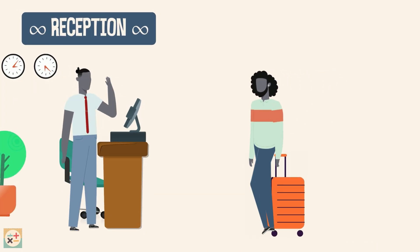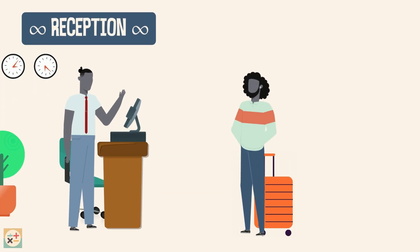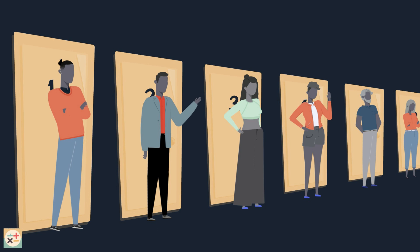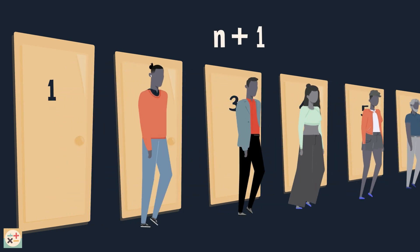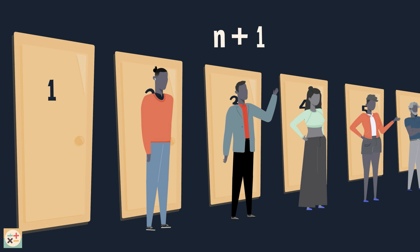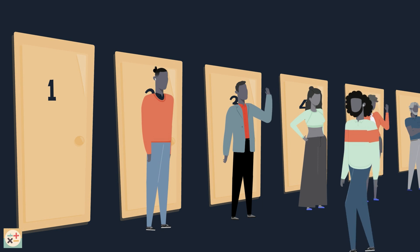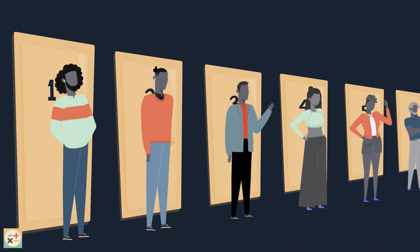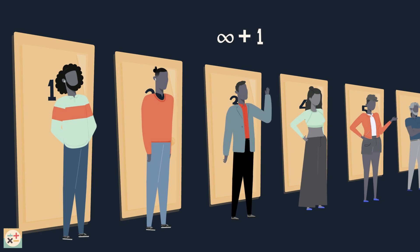Let's say a new guest arrives, but all the rooms are full. How can we make space? Simple — we ask each guest to move from their current room to the next one. The guest in room 1 moves to room 2, the guest in room 2 moves to room 3, and so on. This is possible as there are an infinite number of rooms. If we use the letter N to represent the room number, each guest moves from room N to room N plus 1. This leaves room 1 empty, ready for our new guest. Even though the hotel was full, we've managed to squeeze in one more person. So, we can add 1 to infinity.